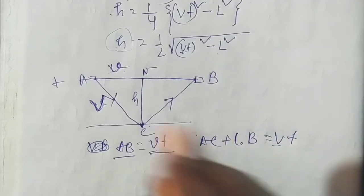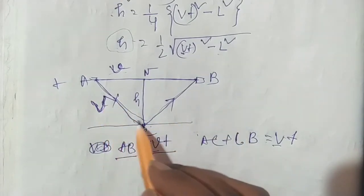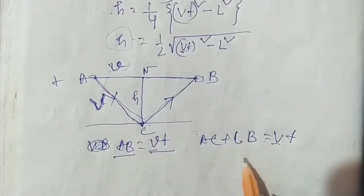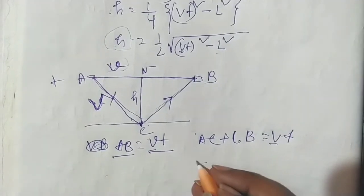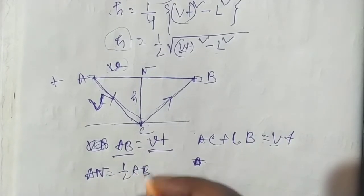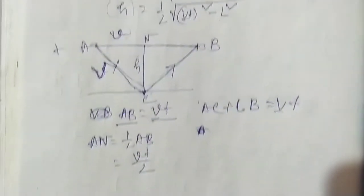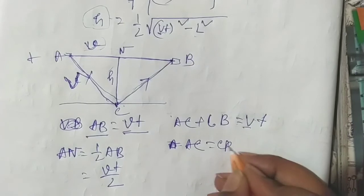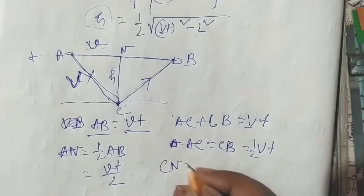And see if the number one belongs to each other — the number one is equal to the number one, and the number one is equal to the number one. So let's check each number. A n — a b is a middle point. A b — v t by 2, v t by 2 — and this is what we call a c = c b equal to half v t. And c n.